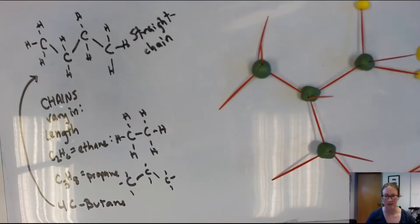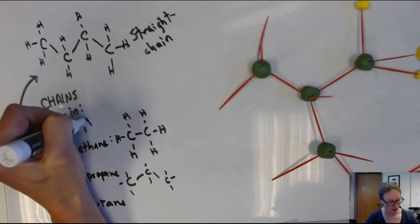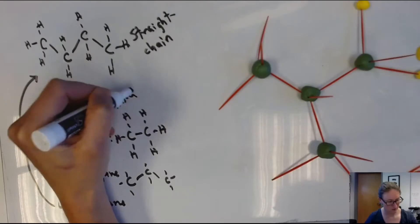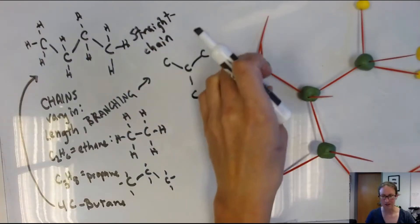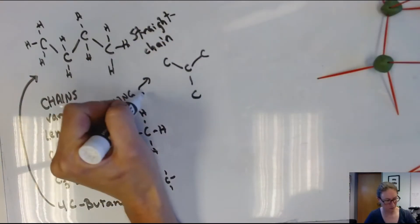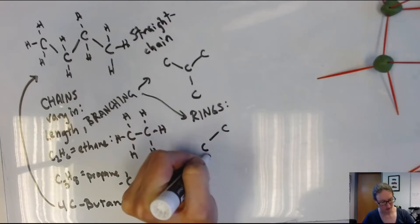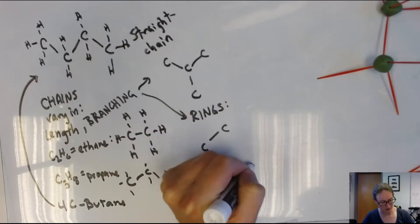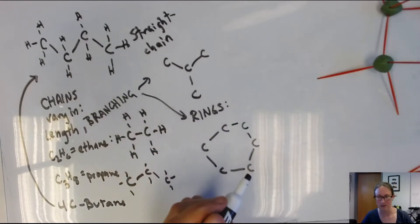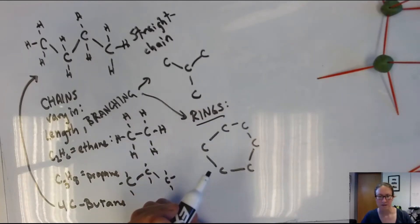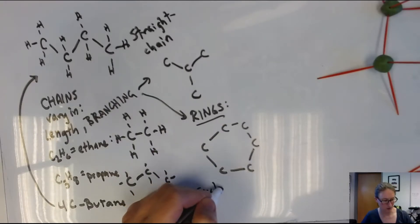For another example, it's actually possible to form a ring of carbons. So they can vary in length, they can vary in branching, and they can also form rings. A very common configuration for rings is a ring with six members in it. So rings are another possibility here. And this molecule that I've shown here is a molecule known as cyclohexane.